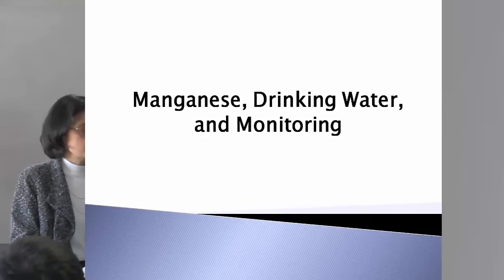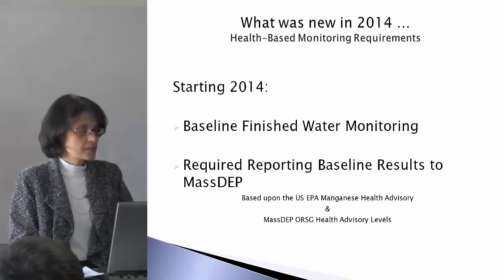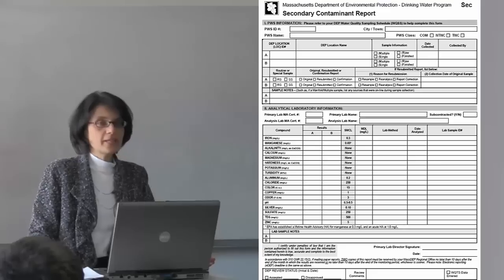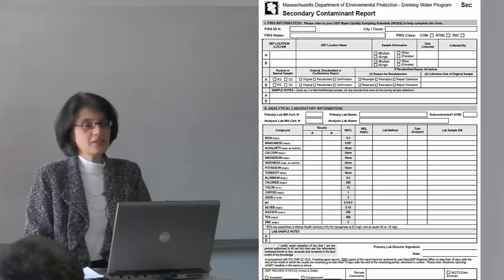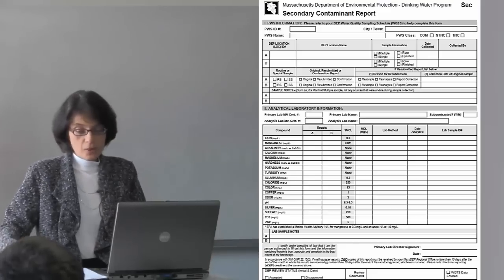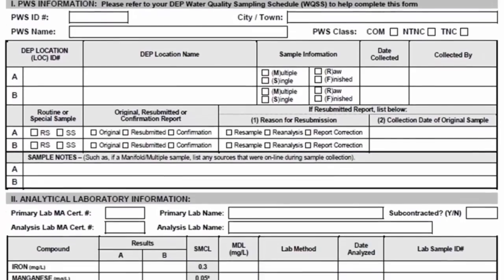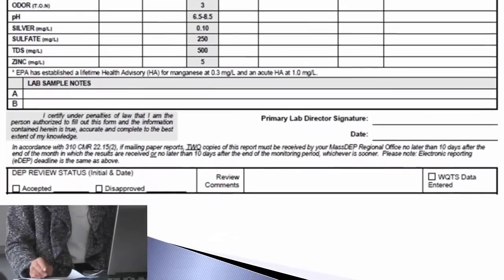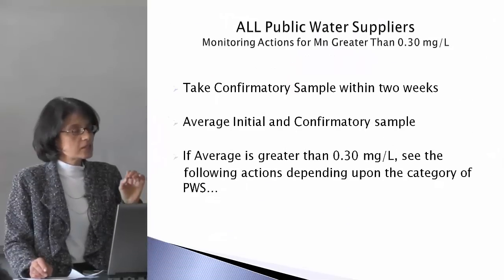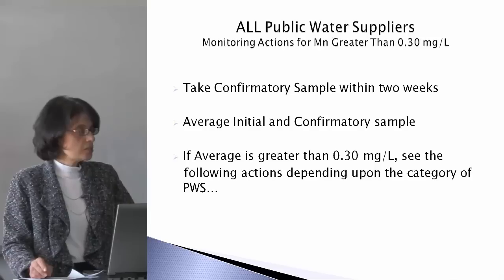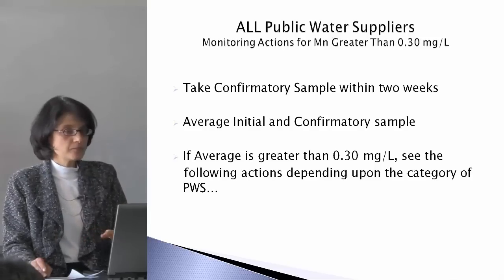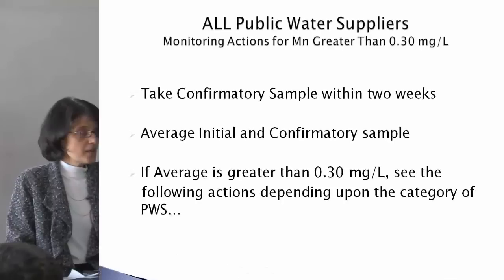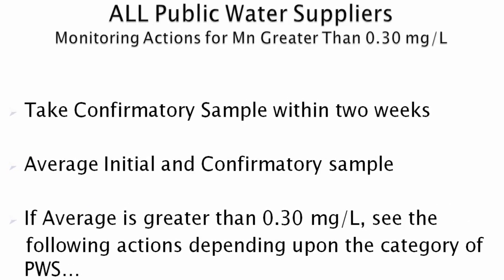Starting in 2014, baseline finished water monitoring samples were required — and that's finished water versus raw water. We have had some confusion in that area. There have been some raw water samples submitted from systems that were treating for other contaminants. We really want the finished water sample. If the monitoring results from your 2014 baseline data, or future sampling, are greater than 0.3 milligrams per liter, then these are the actions.